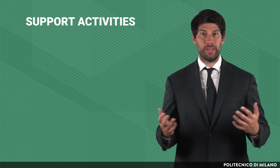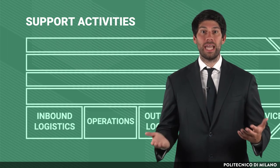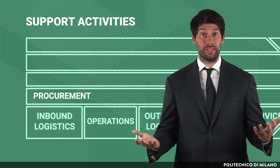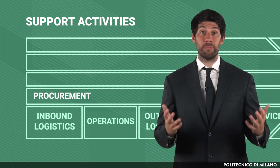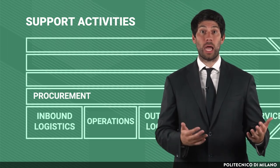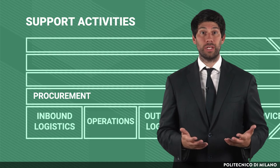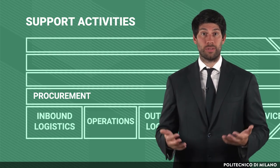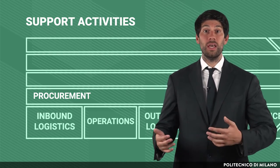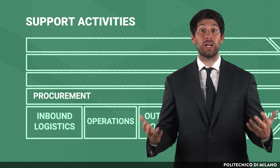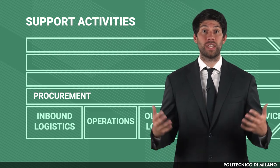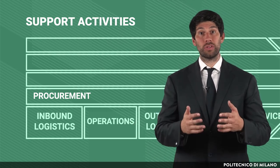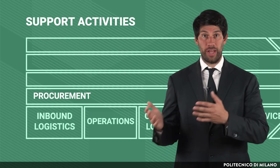Among these activities, the model highlights procurement — that is, every activity linked to input acquisition like raw material, components, machines, technologies and services needed for the good functioning of the company, like supplier selection, negotiation and rating.